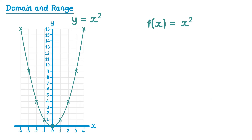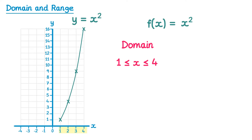We've seen already that the domain for this function is all real values of x. Sometimes though we like to restrict the domain. Let's imagine we restricted the domain to x values in between 1 and 4, so we're only interested in this part of the graph. Now if this domain is restricted it also has an effect on our range — you can see the range of values on the y axis now goes from 1 to 16. So the corresponding range is f of x in between 1 and 16.